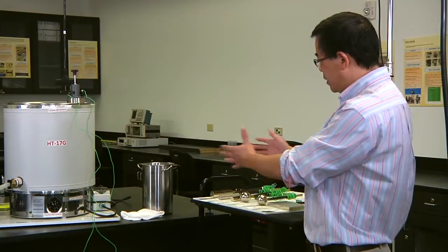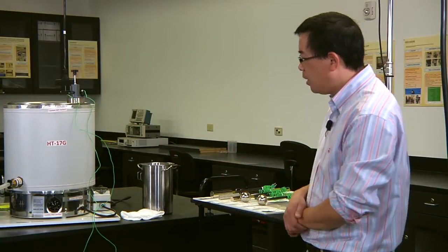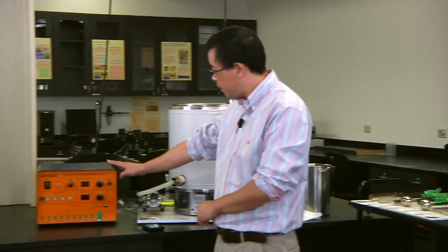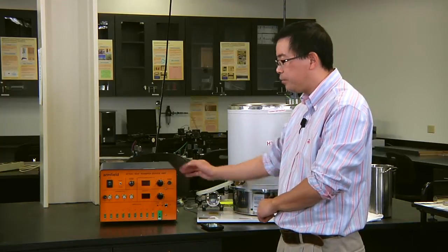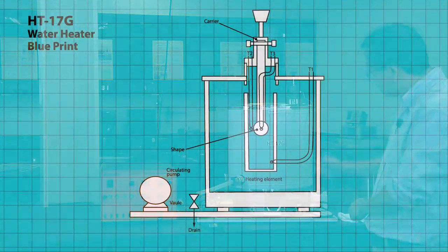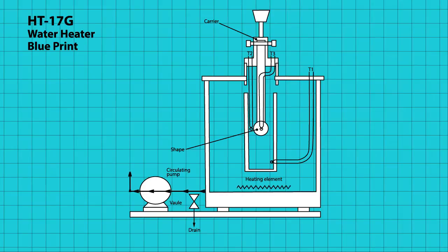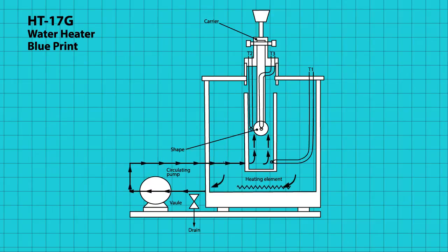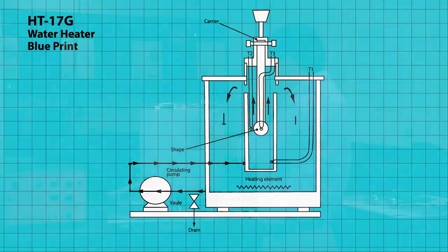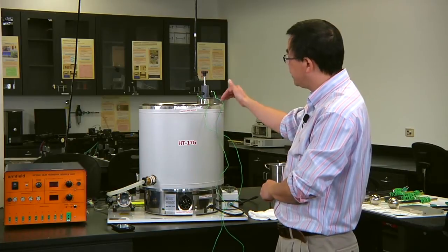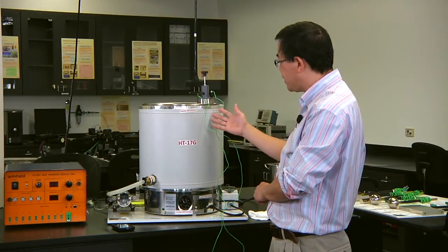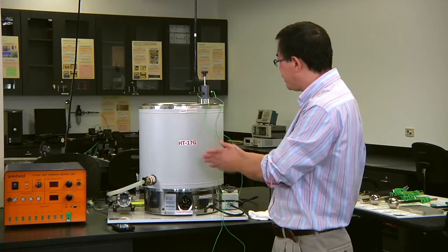Let's first get familiar with the equipment. I do not have to repeat how to operate the service unit — this is the third time we're working on it. The module here is called HT17G. This is actually a water heater. You see the big container over here? This is a water container with a volume of about 30 liters of water. I already put 30 liters of water in there and preheated it.